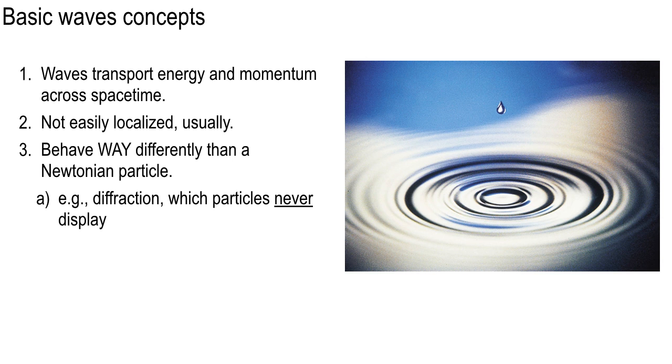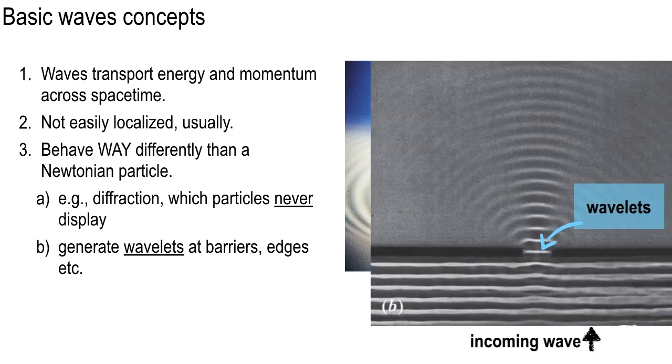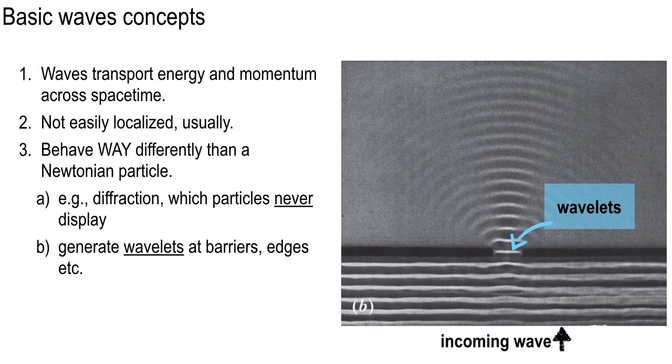They do deposit energy and momentum, but not necessarily the matter through which they wave. They're not easily localized, usually. Sometimes we can localize a pulse of waves with a laser and so forth. But this is another property of waves. You're looking at the waves in the ocean. Do you mean the wave that just passed you by or the one that's coming at you or the one that just left you or the one five minutes from now or what? Where's the, it doesn't really have an edge. It doesn't have a center of mass, but it does communicate energy and momentum. So it behaves way differently than a Newtonian particle.